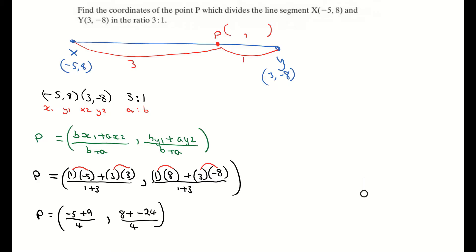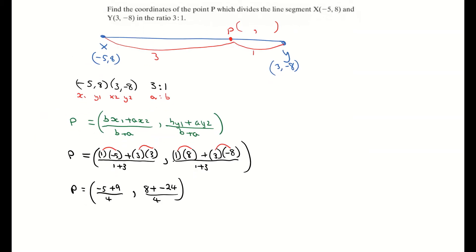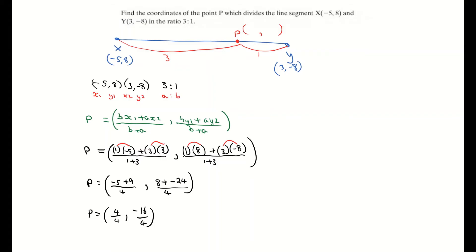Now I'm just going to tidy up my fractions. So that's giving me -5 plus 9, which is P is equal to 4 over 4. Comma. 8 plus negative 24 is 8 take 24, which is -16 all over 4. Simplify your fractions. So 4 divided by 4 is giving me 1 and -16 divided by 4 is negative 4.